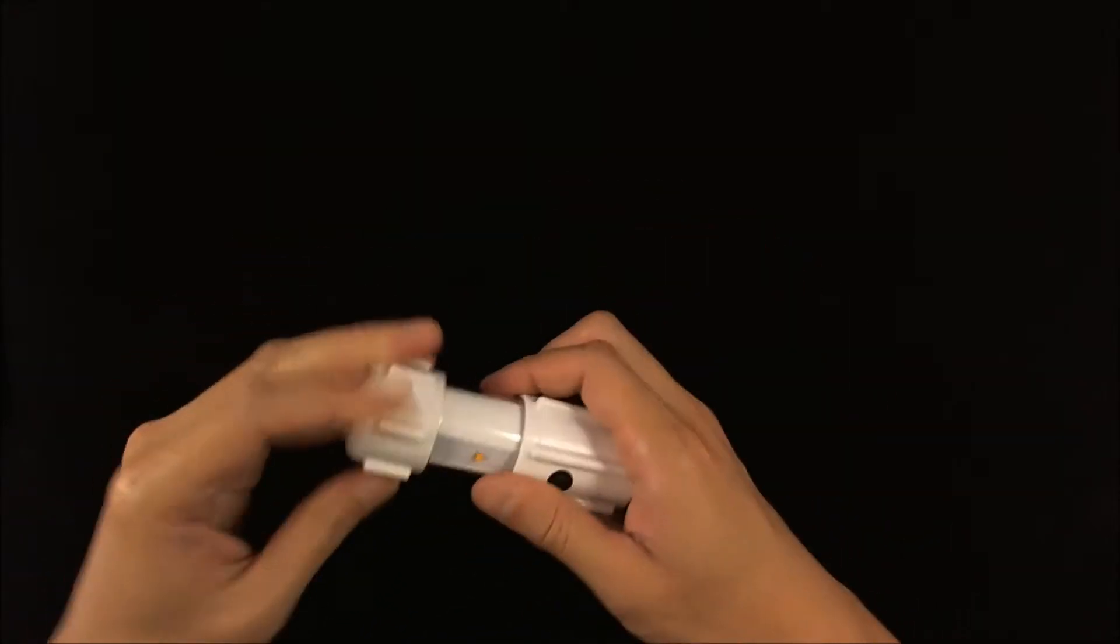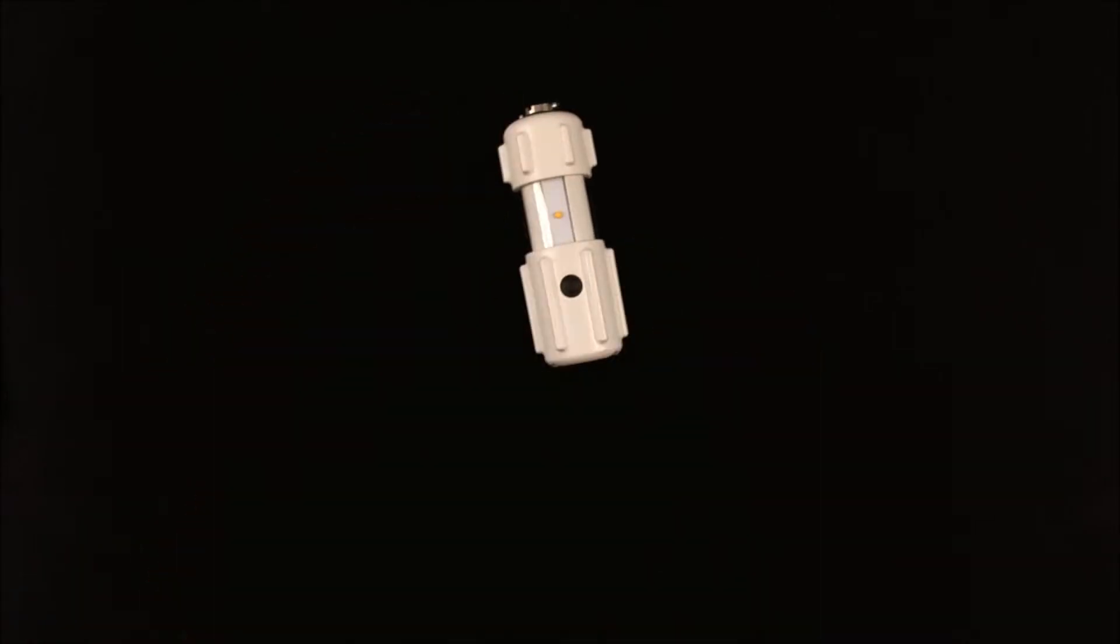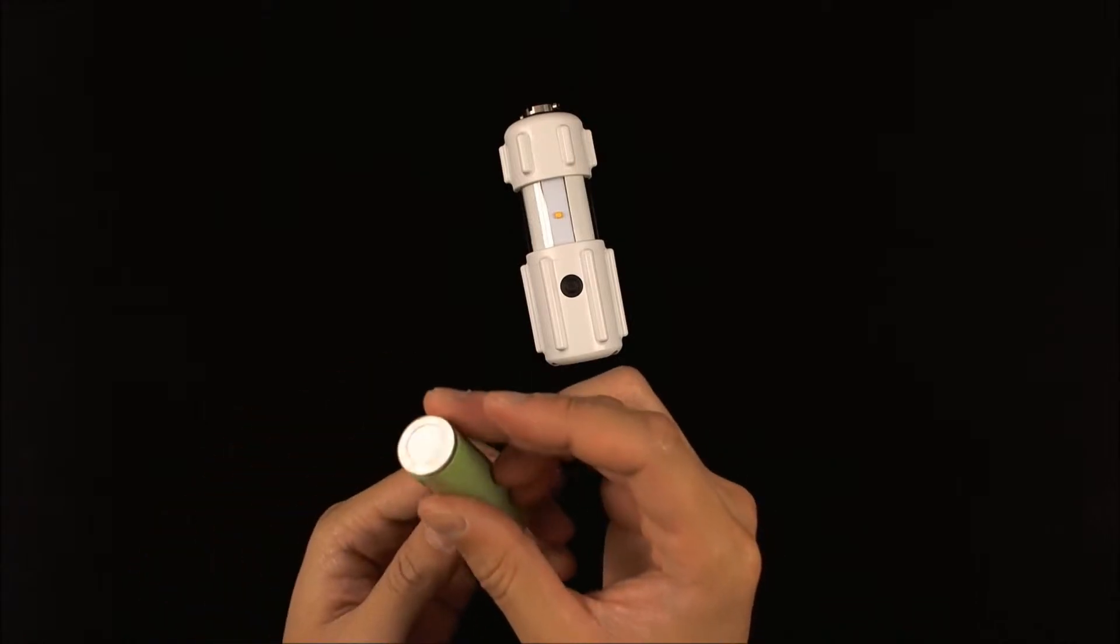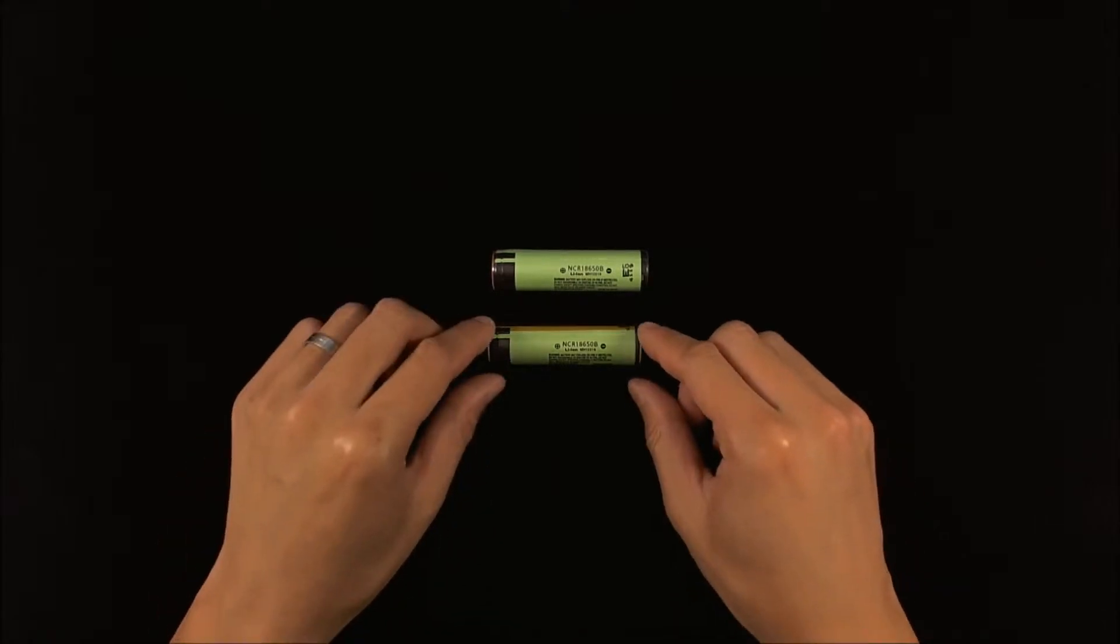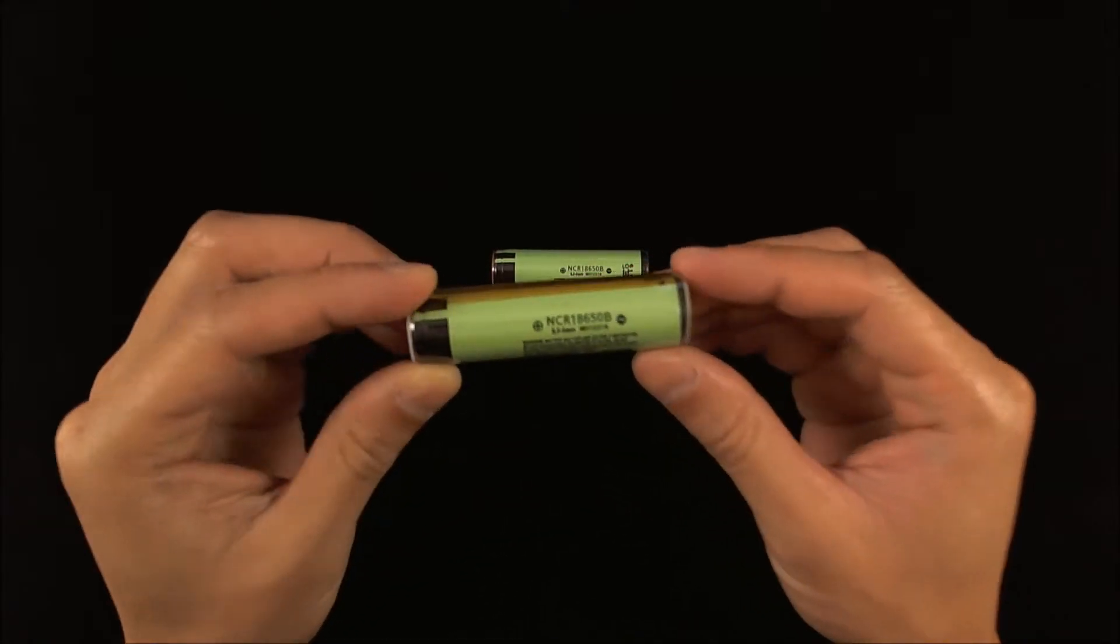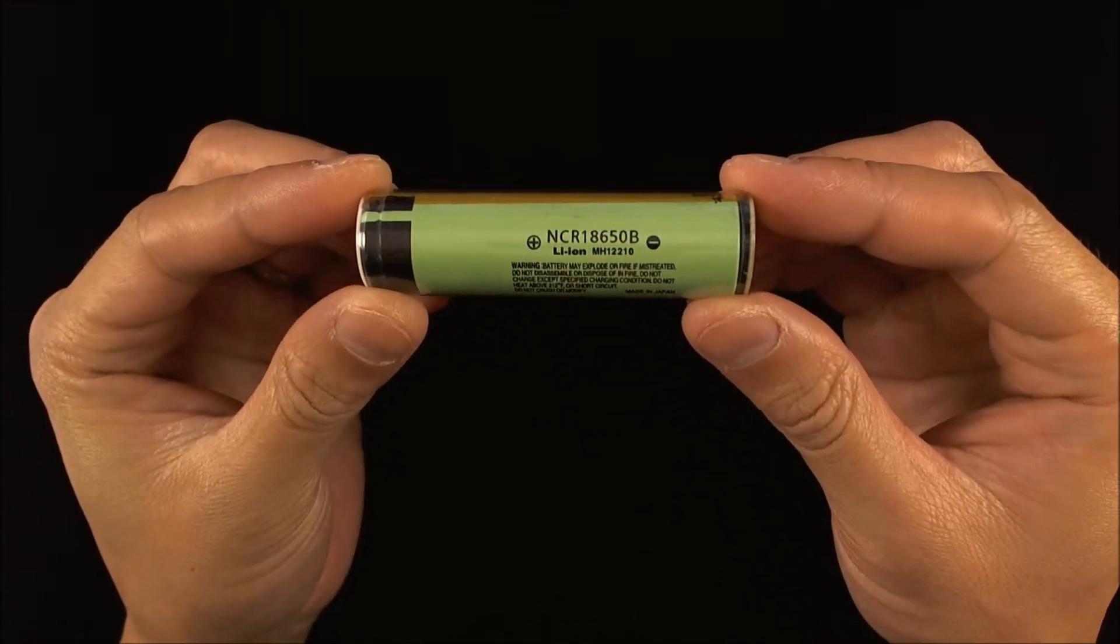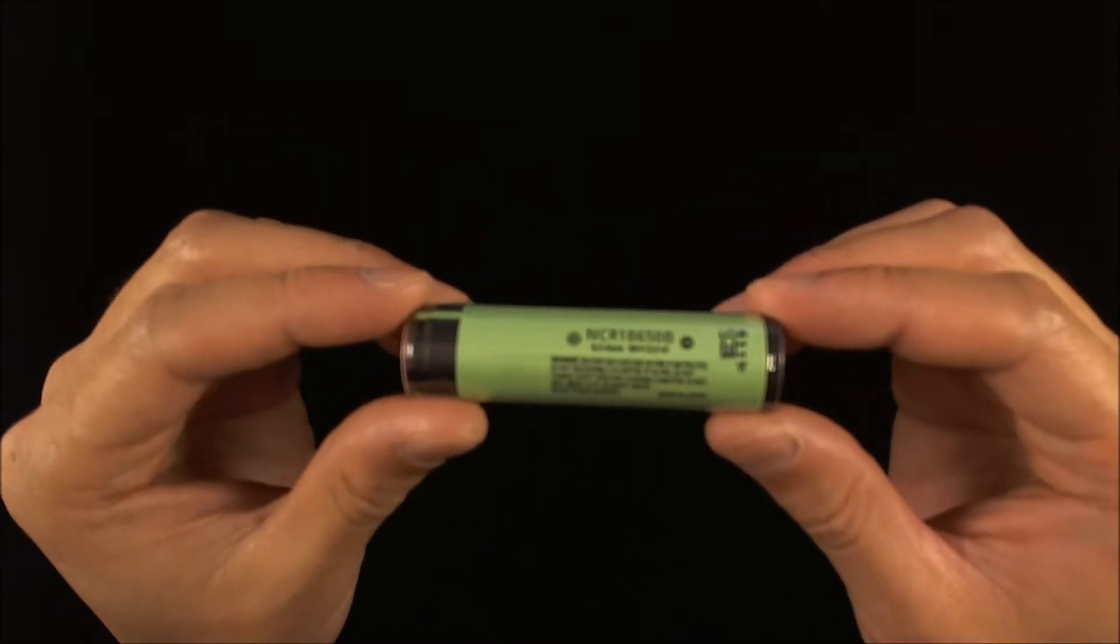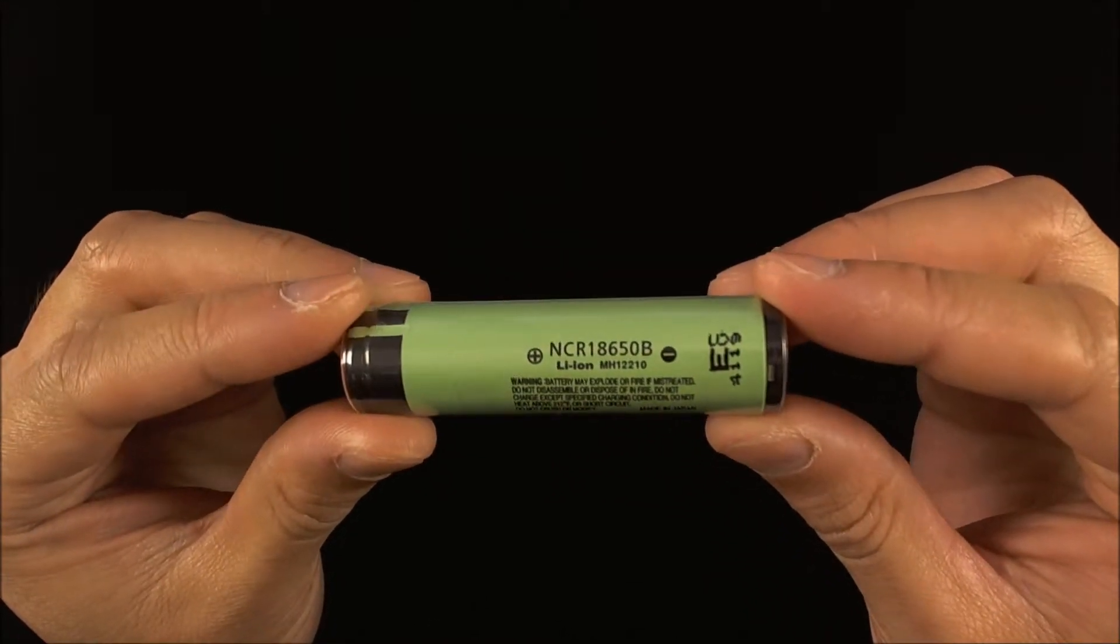We're going to take a look at the protected cells first and see why this works. Then we'll discuss the differences between an unprotected and a protected cell to see why we decided to only support protected cells. Here I've got a couple of Panasonic 18650B batteries. We've got the Made in Japan NCR 18650B lithium ion on both.